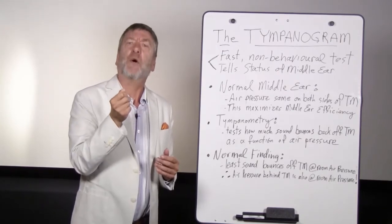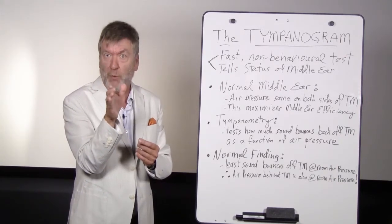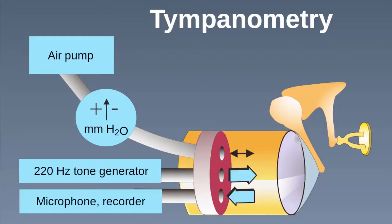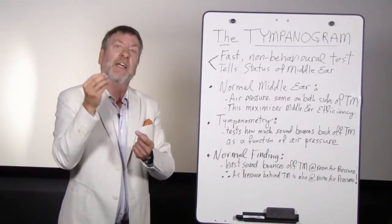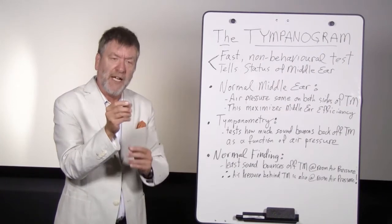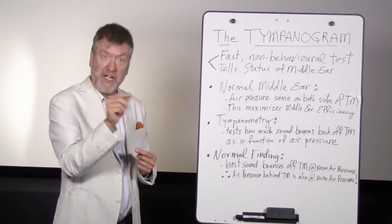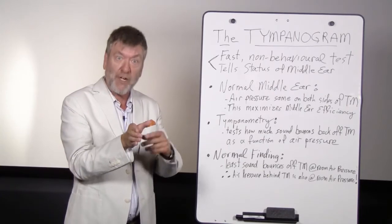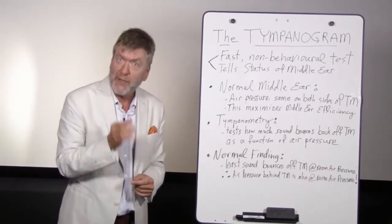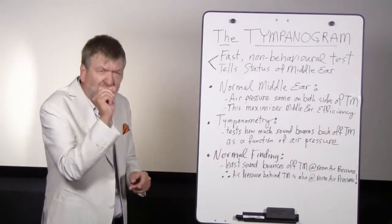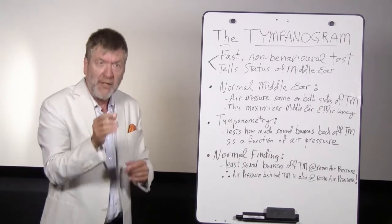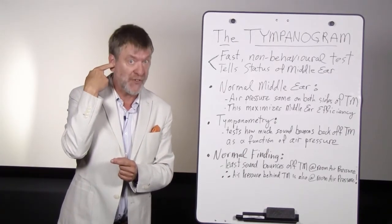Unlike pneumatic otoscopy, which assesses how much the eardrum actually wiggles or moves with air pressure, tympanometry is different. Tympanometry tests how much sound bounces back off the tympanic membrane as a function of air pressure changes in the outer ear canal. Air pressure changes are made in the outer ear canal, and the clinician is examining how much sound is bouncing back off the eardrum as the air pressure is changed from positive to room air pressure to negative. A normal finding with tympanometry is that the least amount of sound is bouncing back off the drum at normal room air pressure in a closed and sealed ear canal.